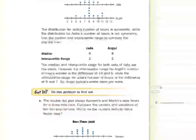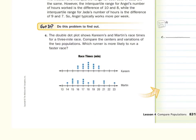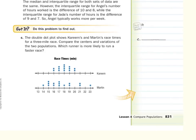And now for our last Got It question: the double dot plot shows Karim and Martin's race times for a three-mile race. Compare the centers and variations of the two populations. Which runner is more likely to run a faster race? Karim's distribution is symmetric, whereas Martin's is not. So we're going to use the median and interquartile range one more time.